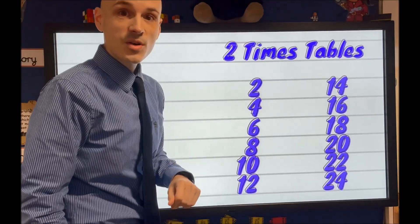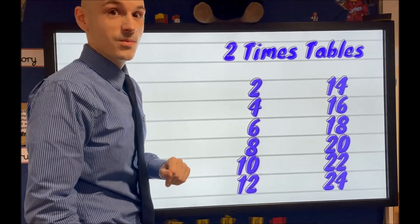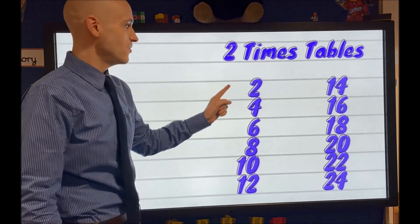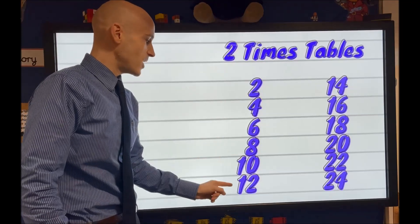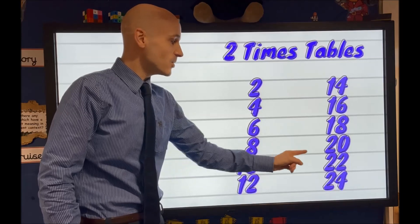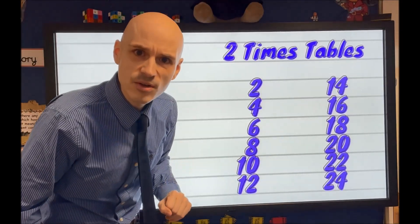Very good, right. We'll have one more go through and this time we'll go at full pace. See if you can join in with me. Okay, are you ready? Off we go. Two, four, six, eight, ten, twelve, fourteen, sixteen, eighteen, twenty, twenty-two, twenty-four. Very good. Absolutely awesome, guys.